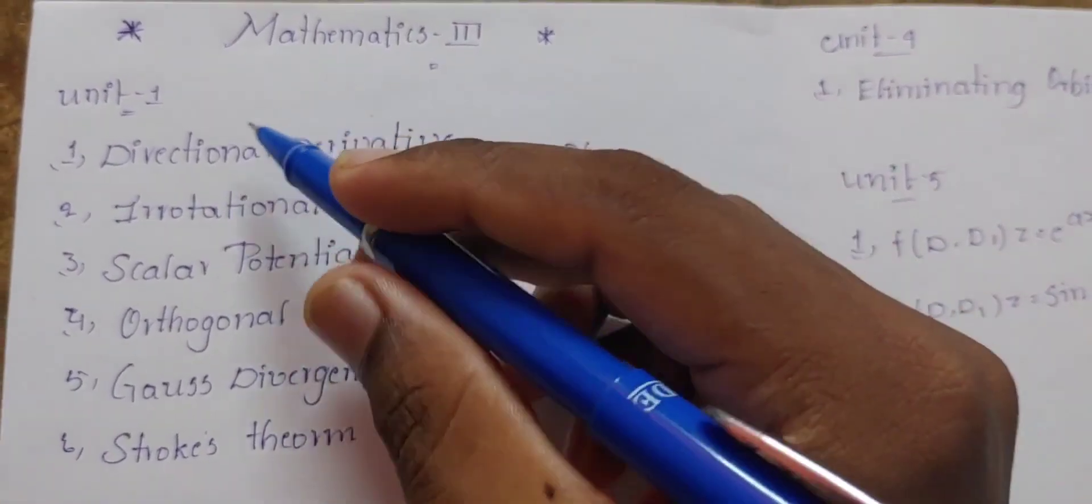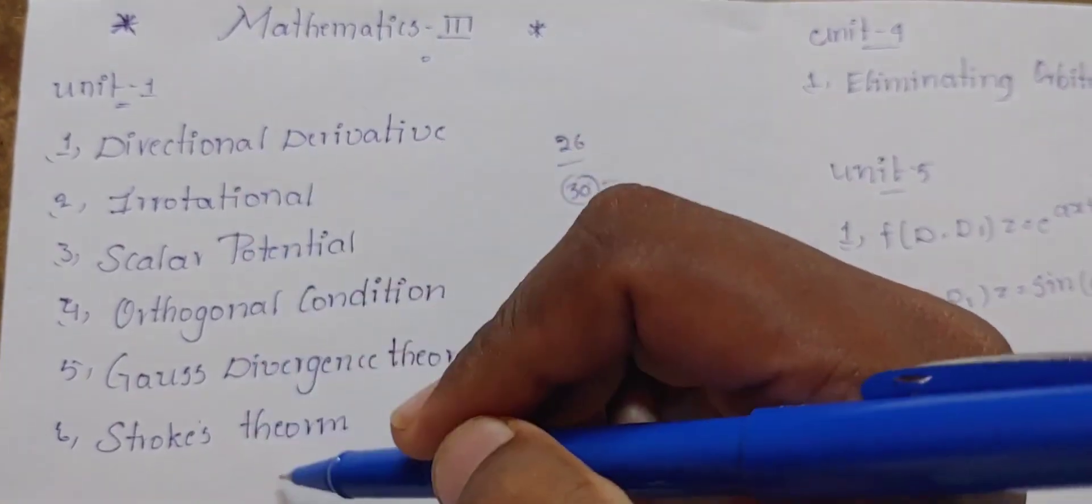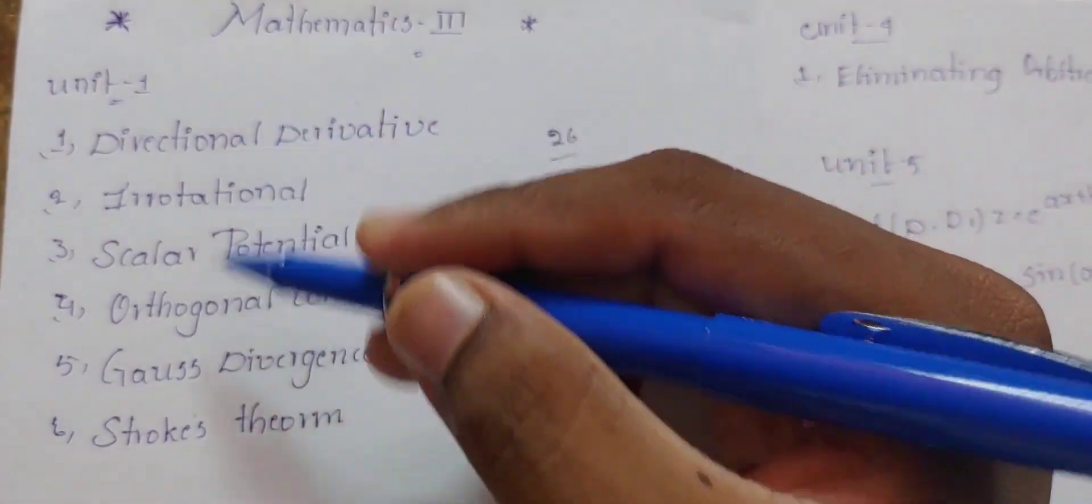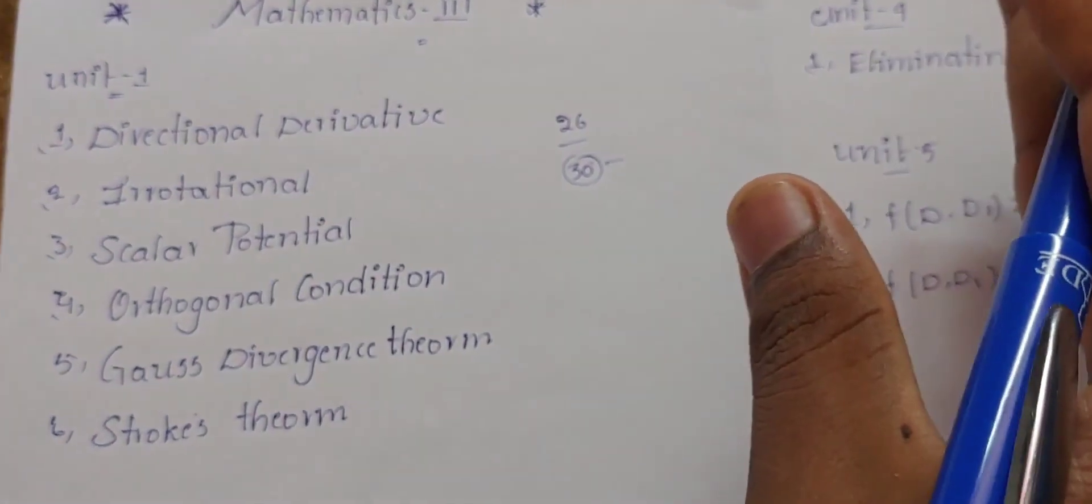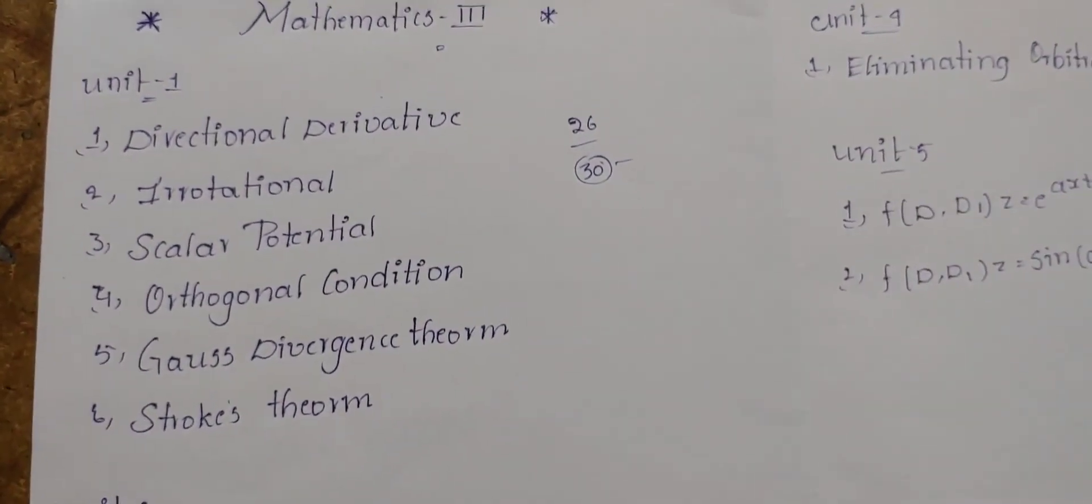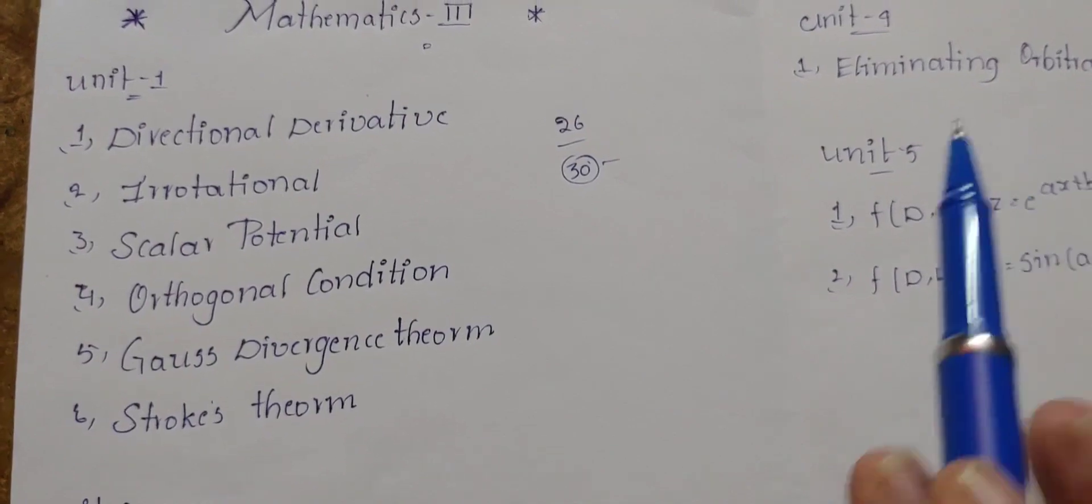Next, the Gauss divergence theorem and Stokes theorem. These two topics are required. For example, you can do the same thing.